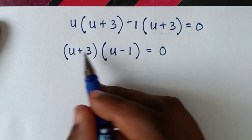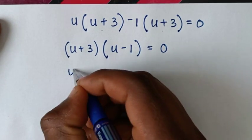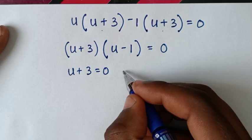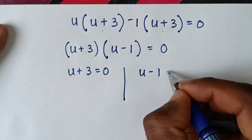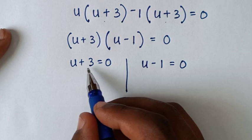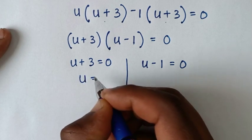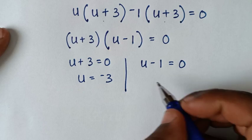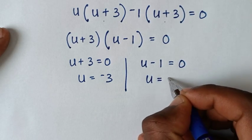This gives two solutions: u + 3 = 0 and u − 1 = 0. From the first, u = −3, and from the second, u = 1.